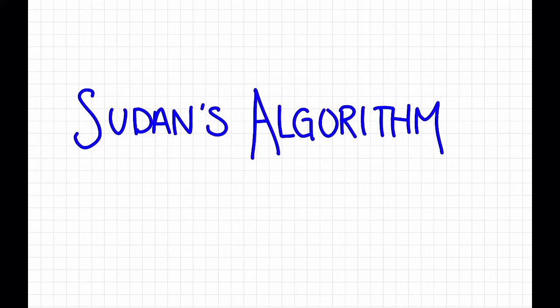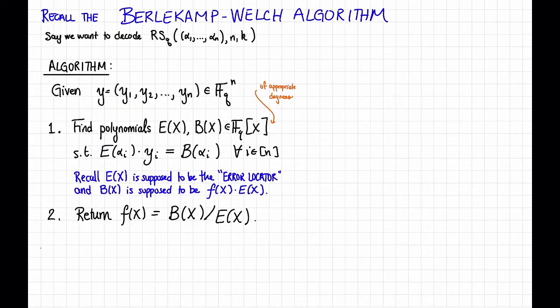In this video, we'll see an algorithm for list decoding Reed-Solomon codes. It's not going to get quite to the Johnson bound, but we'll fix that later. To start, for some inspiration, let's recall the Berlekamp-Welch algorithm. Remember that this was an algorithm for efficiently uniquely decoding Reed-Solomon codes up to half their distance.